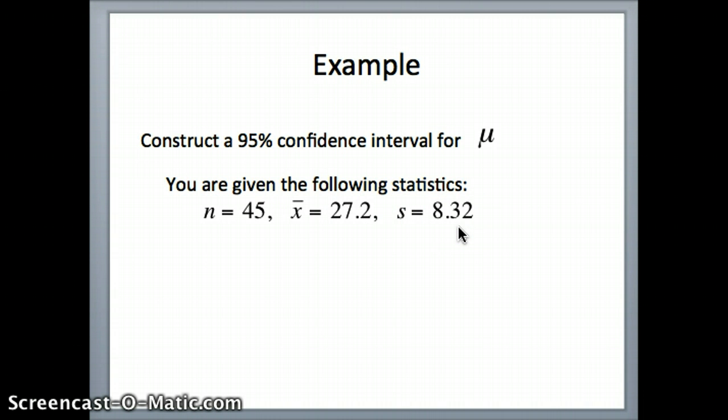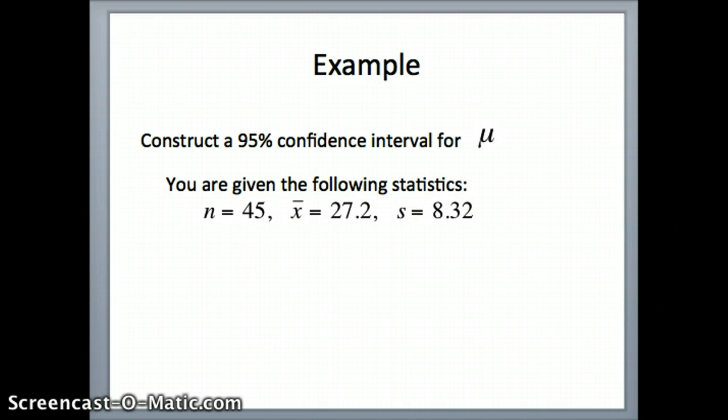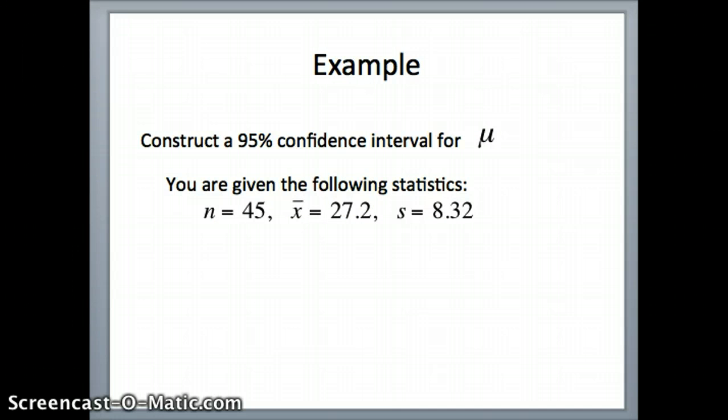So if we have 45 nurses chosen, on average they see 27.2 patients with a standard deviation of 8.32. That is just from a sample of 45. If we had all of the millions of nurses in the population, would we expect the numbers to be the same? We'd expect them to be similar, but not necessarily the same. So that's what we'll talk about.